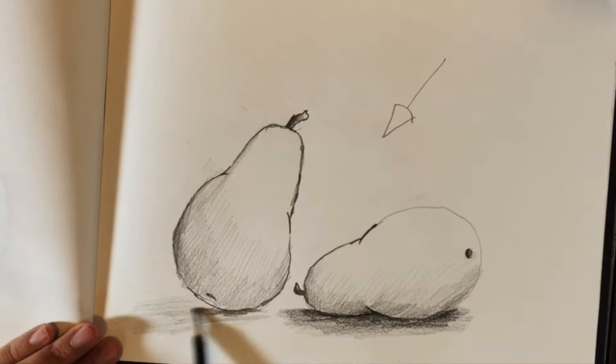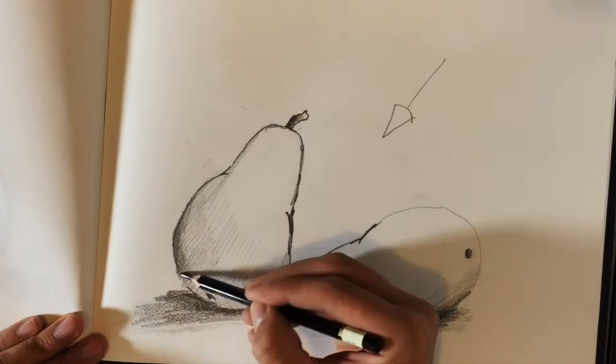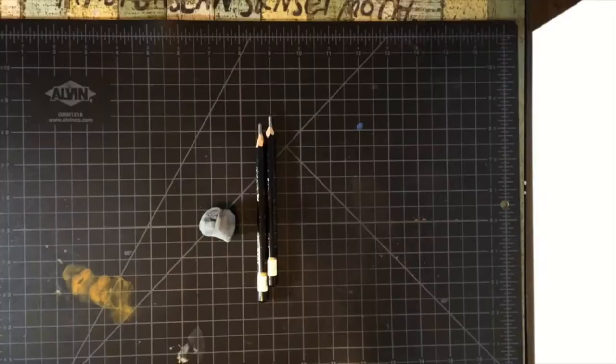Now I will use my 6B pencil to show the difference between the shadows and to make the pears pop out more. Some final details and we're all done here.